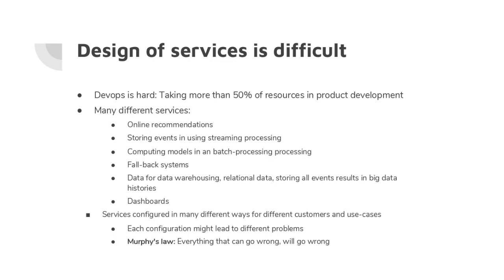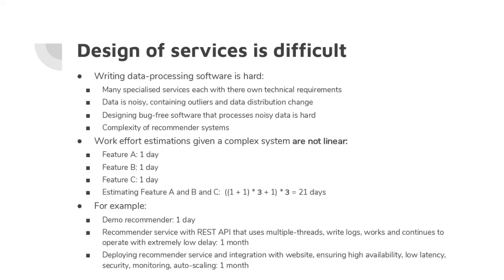Murphy's Law applies in real-world settings with real users — if anything can go wrong, it will. Data processing software is also hard: many specialized services, noisy real-world data with outliers, distributions that change over time, and the challenge of designing bug-free software to process this noisy data. Recommender system complexity itself is a topic unto itself, even without software and DevOps issues.